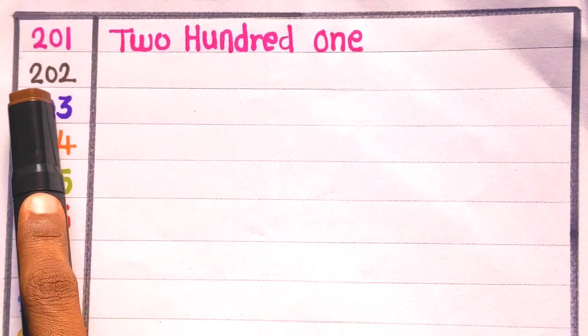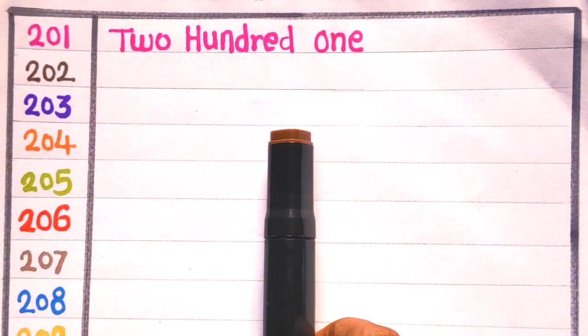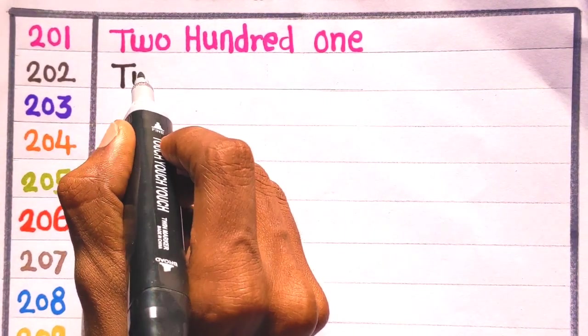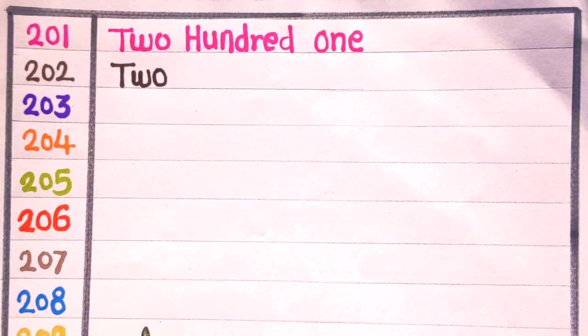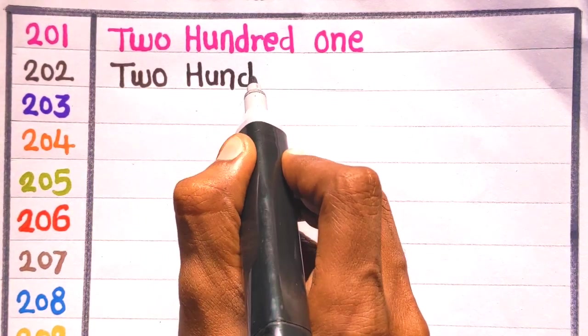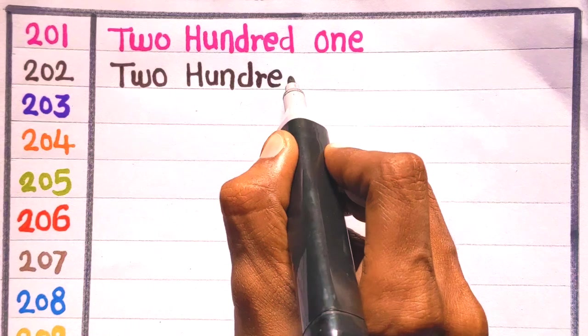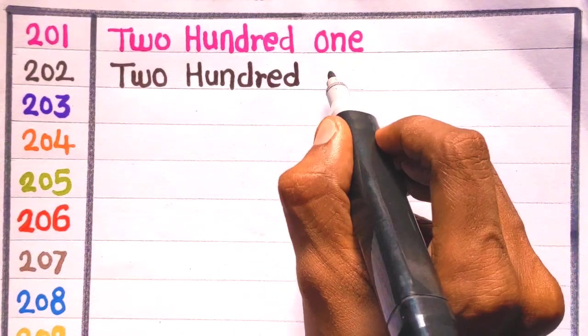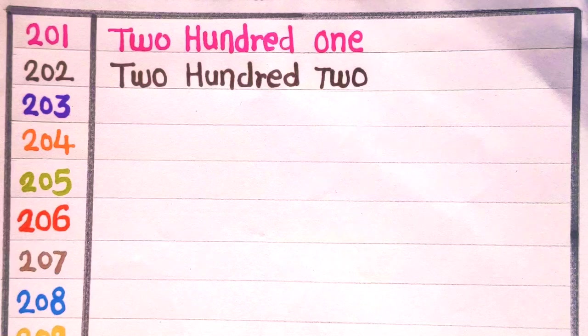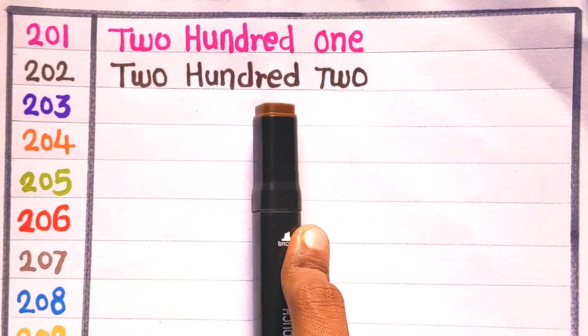Next is 202. E is 202. T, W, O, 2, H, U, N, D, R, E, D, 100, T, W, O, 2, 202. With the brown color.